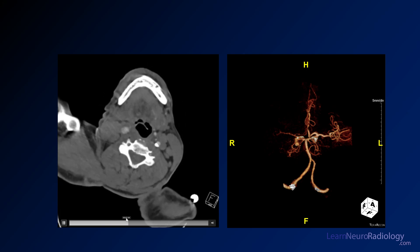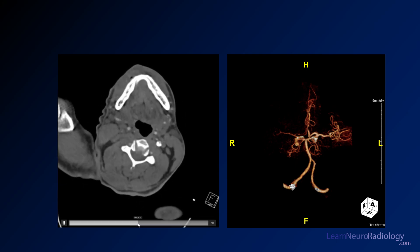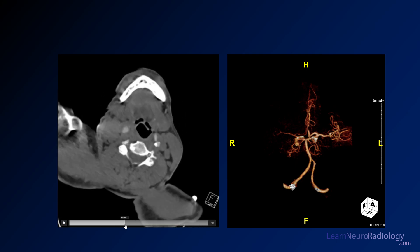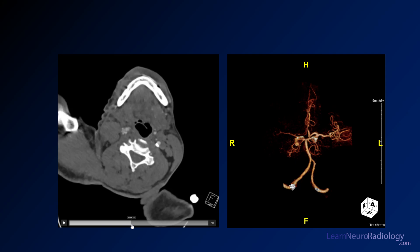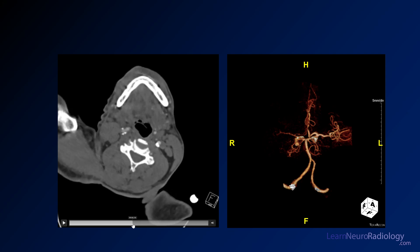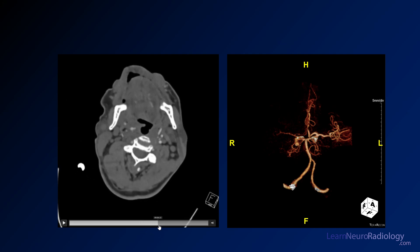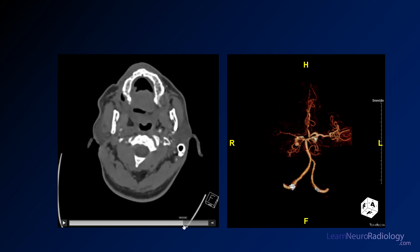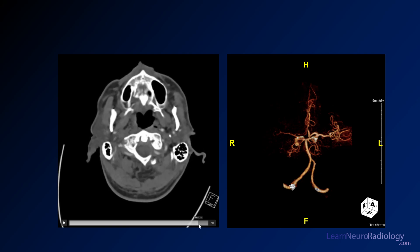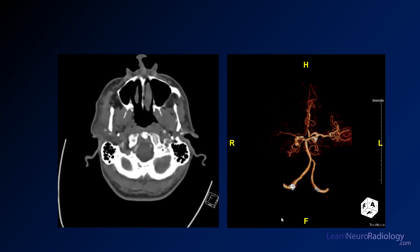We get to this right carotid, and you can see at the carotid bifurcation we're going to bifurcate into the external carotid and internal carotid — and we kind of lose the internal carotid there. So as we come up, that internal carotid artery is occluded in the neck.